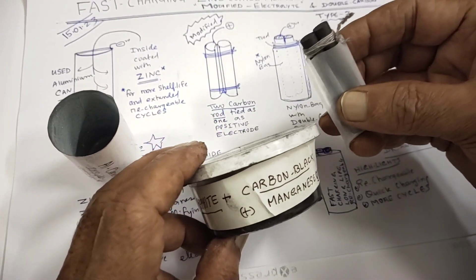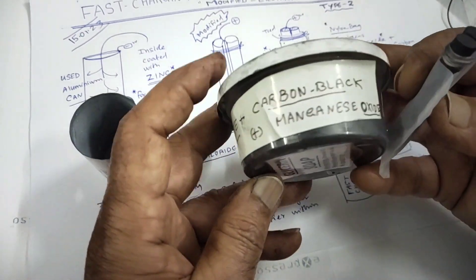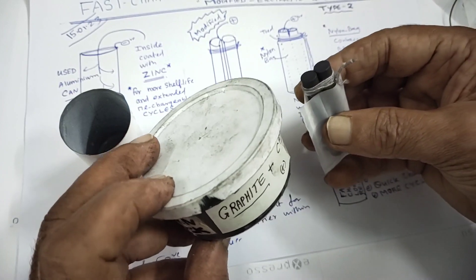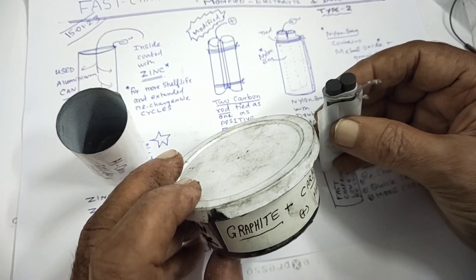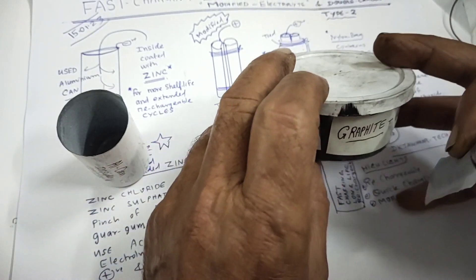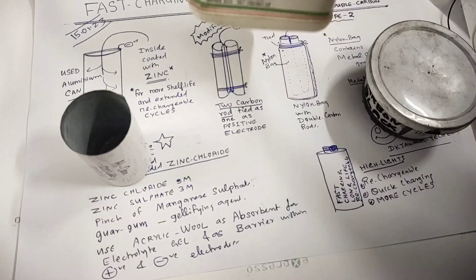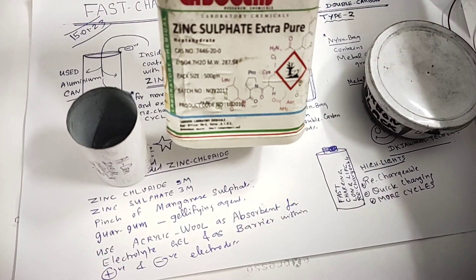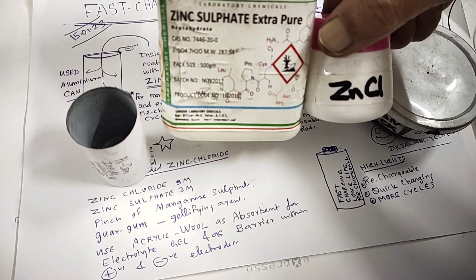Here I will be filling this nylon bag with this carbon black manganese and equal amount of manganese dioxide, manganese carbon black and graphite. I am going to fill it step by step as I was doing in the previous video for Type 1. And the required electrolyte will be equal, here zinc sulfate I am going to use and zinc chloride, which I was not using in the Type 1 zinc coated aluminum battery.